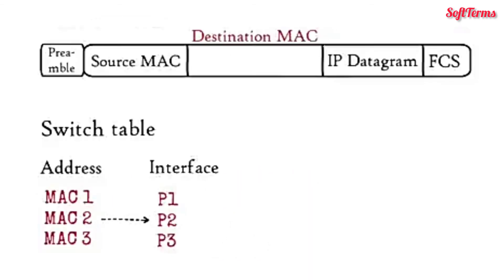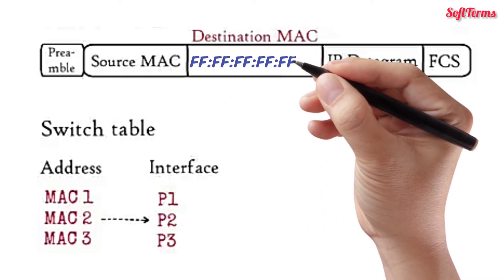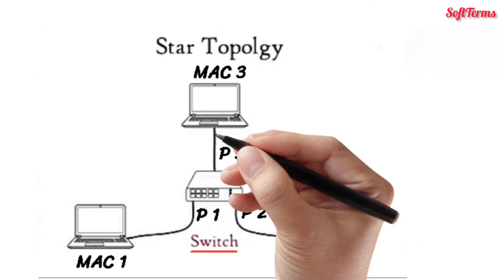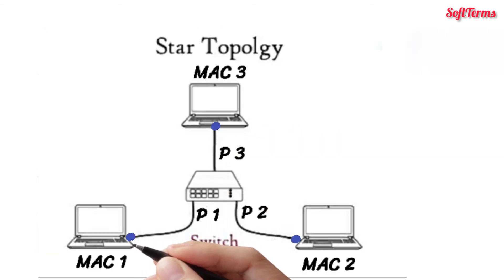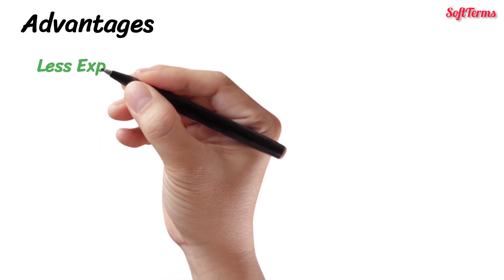Please note that if the destination MAC address in the frame is an Ethernet broadcast address, then the switch also broadcasts the received frame. In star topology, only one input-output port and cable is needed for each device to connect to several devices, making it less expensive than mesh topology.